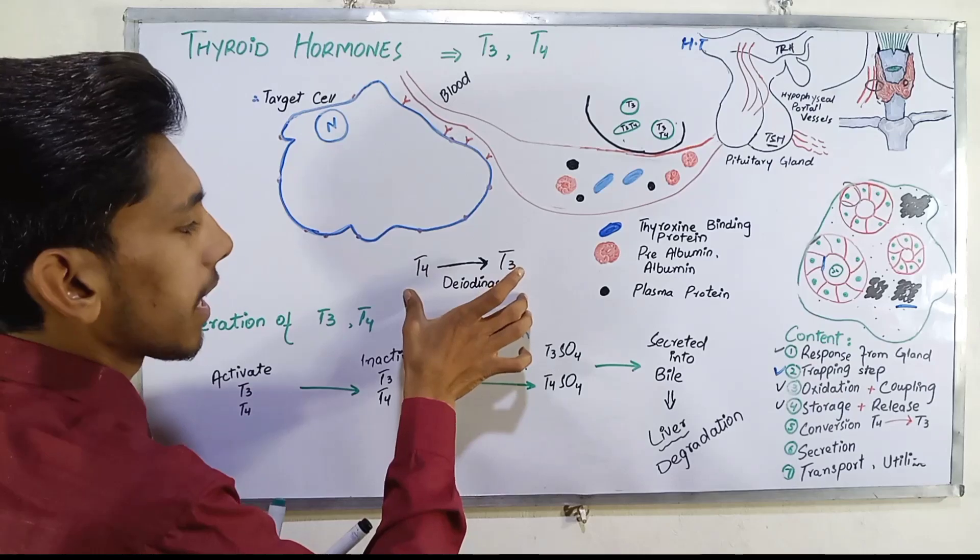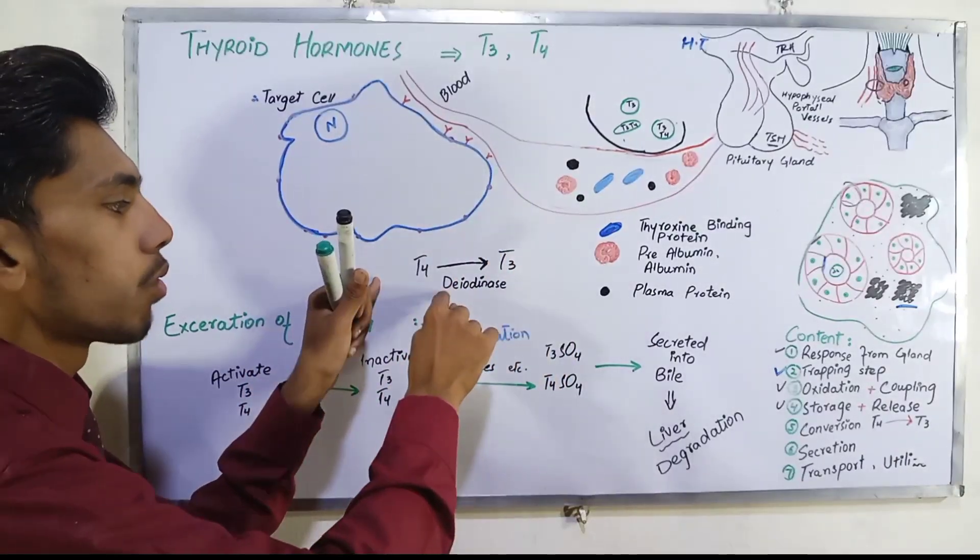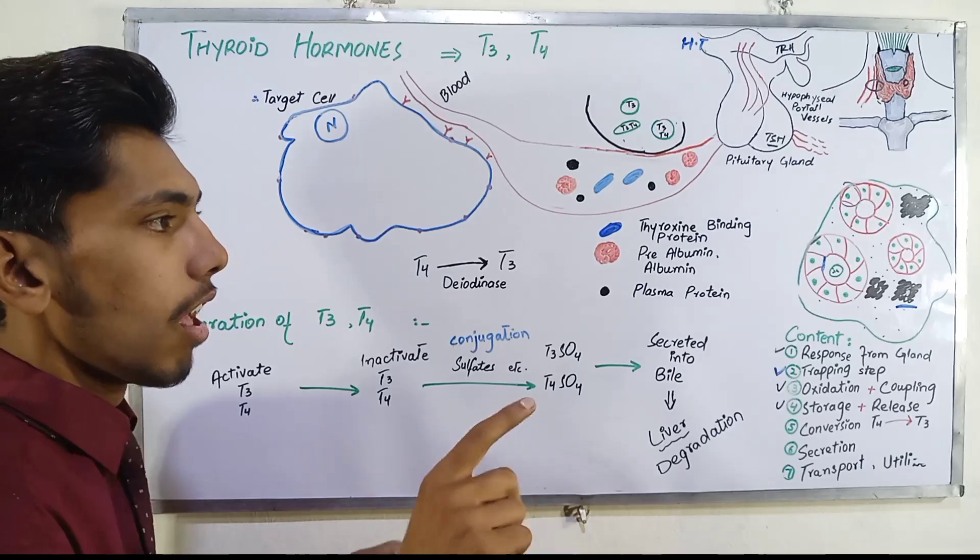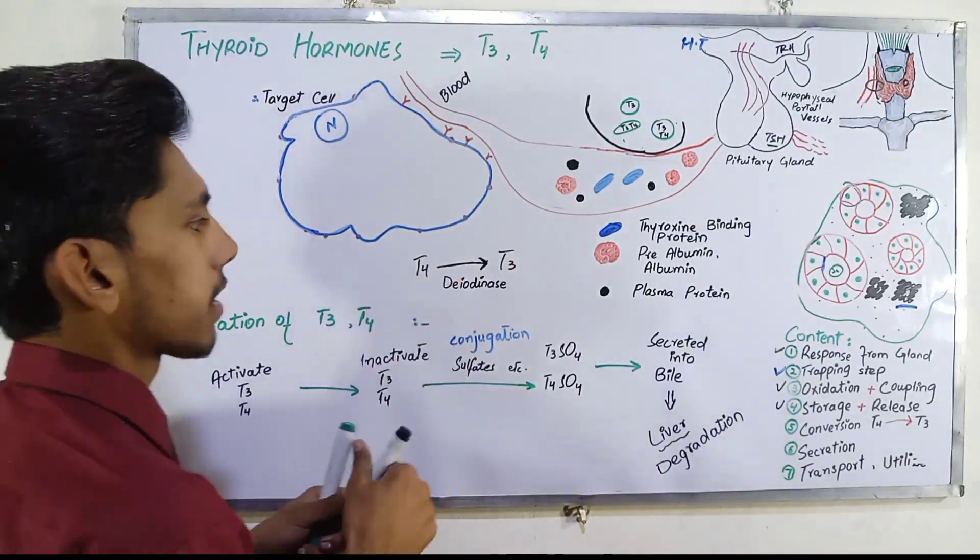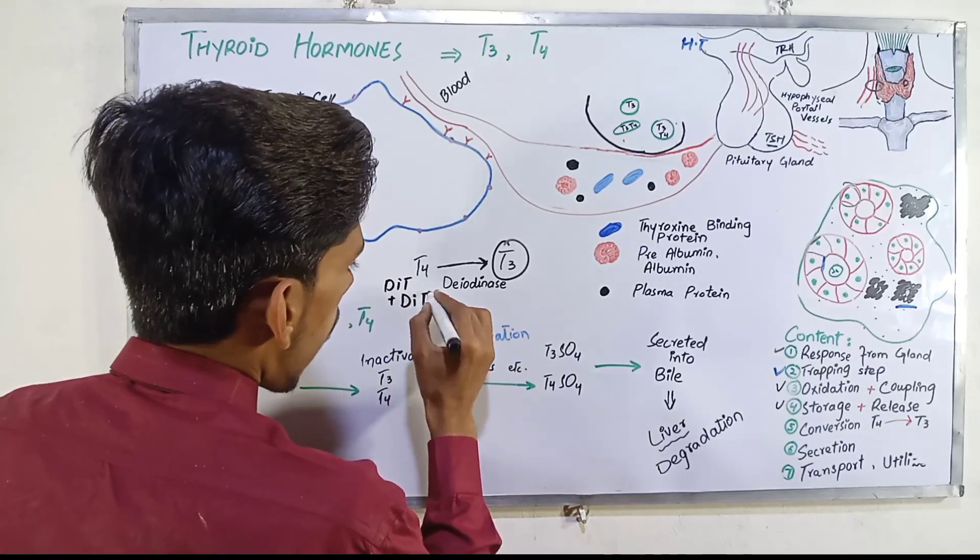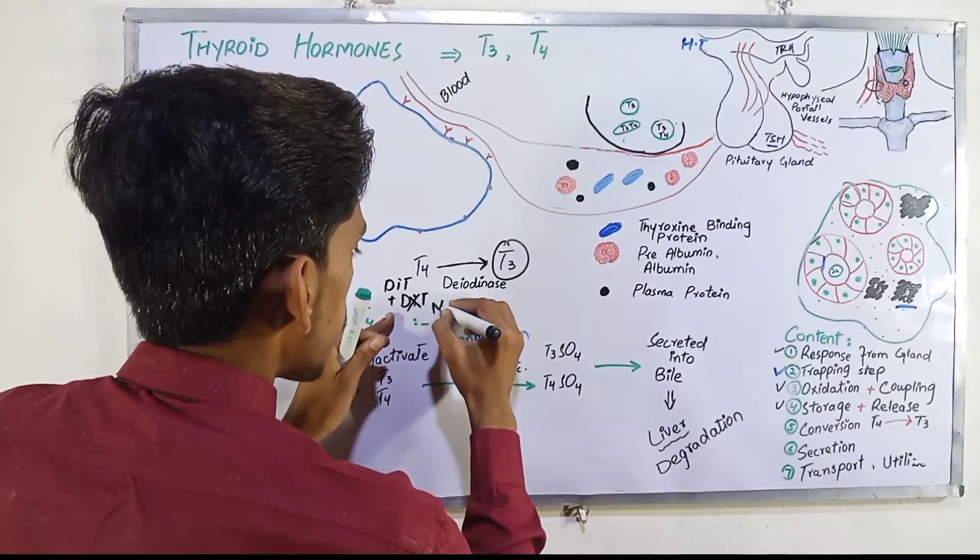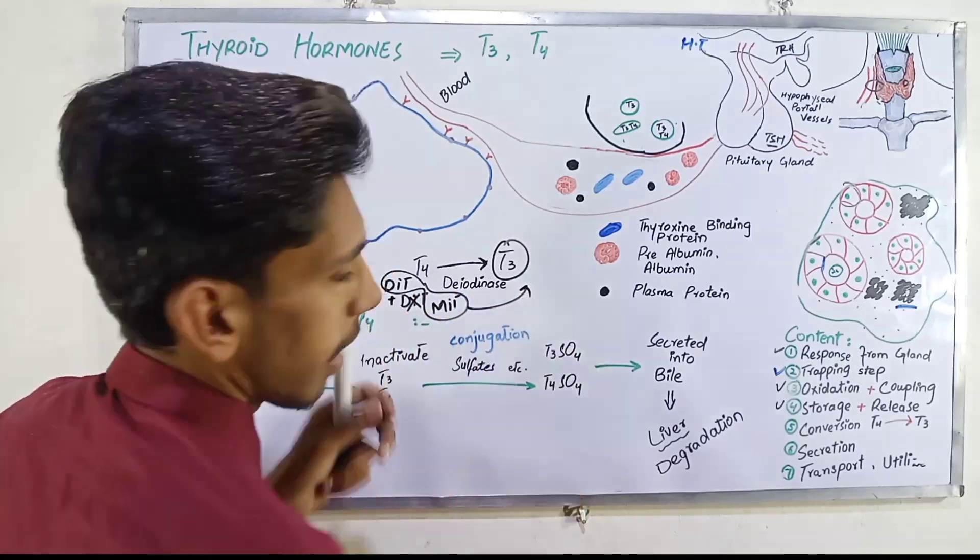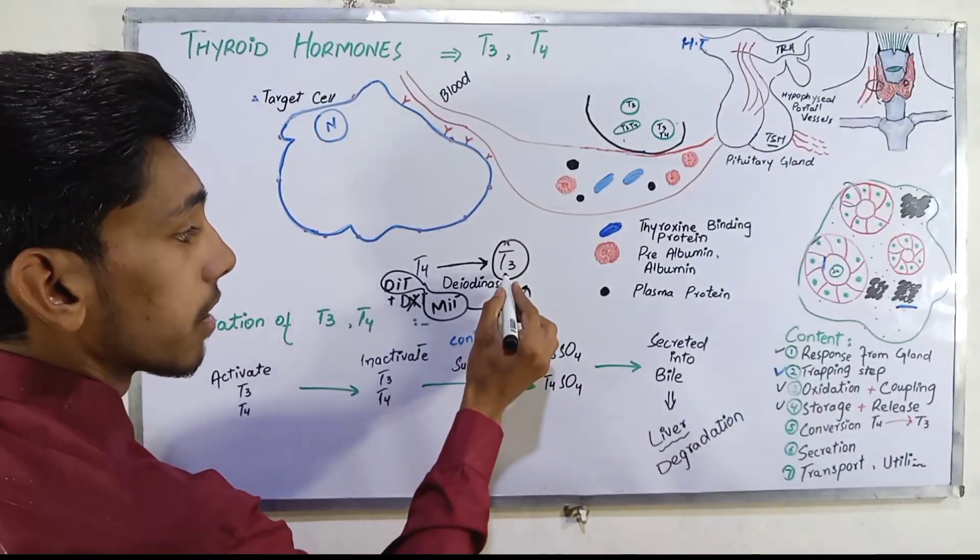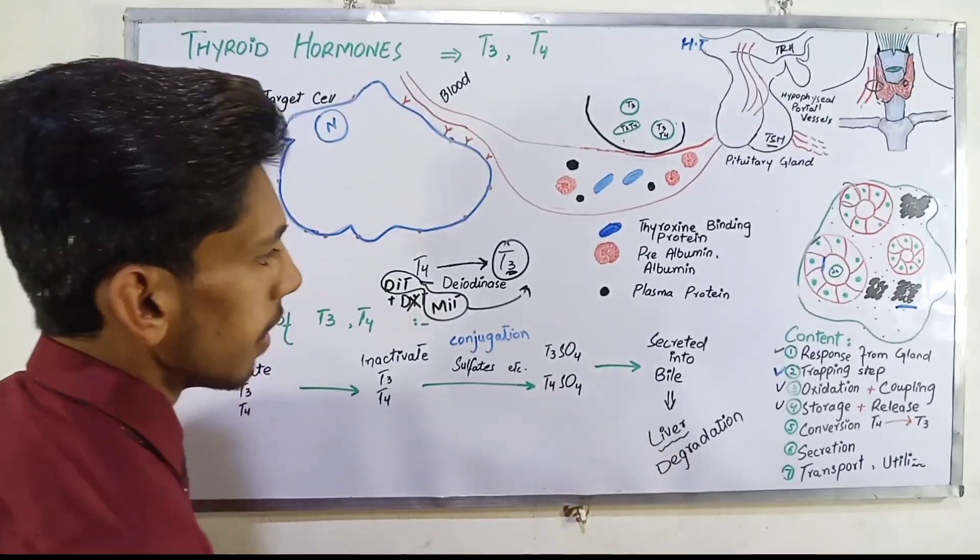We have DIT and MIT - both complexes form T4 and T3. We discussed in the previous lecture what is T3 and what is T4, why T3 and why T4. Here we discuss about conversion of T4 into T3. Now we will see how it can be secreted and transported to the target tissue.